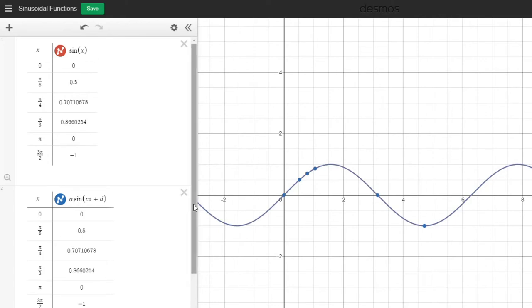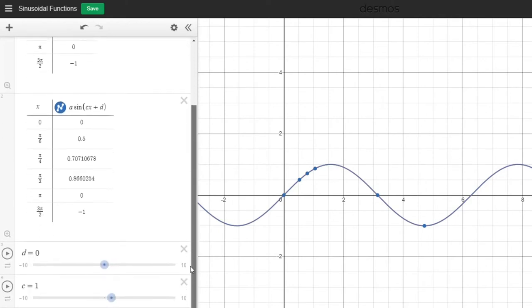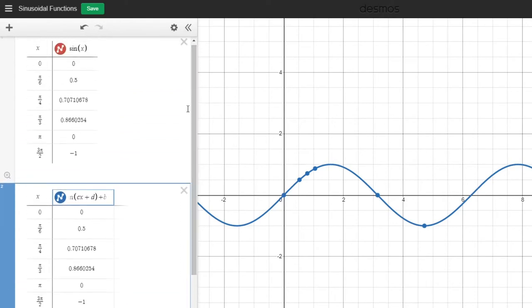Currently, I have A set to 1, B, which is all the way over here, B set to 0, C is set to 1, and D is set to 0. So that's giving us this identical function where they're exactly overlapping.